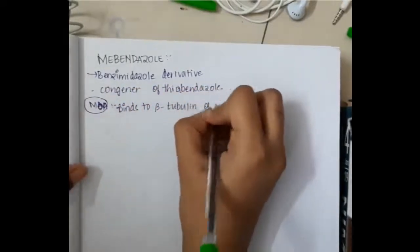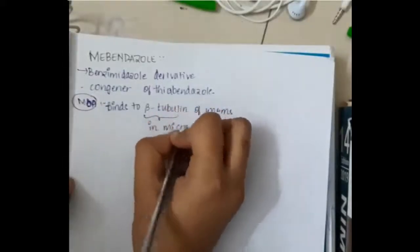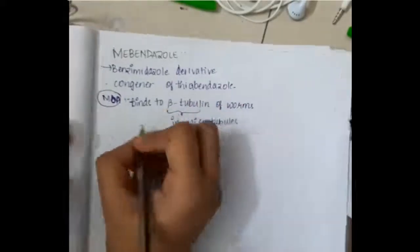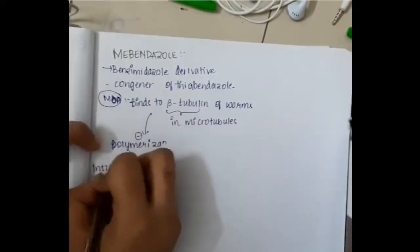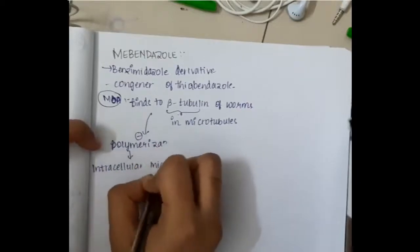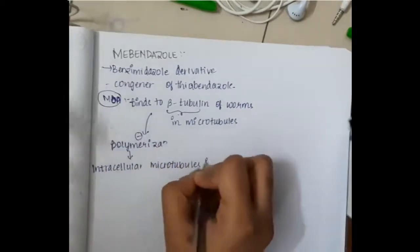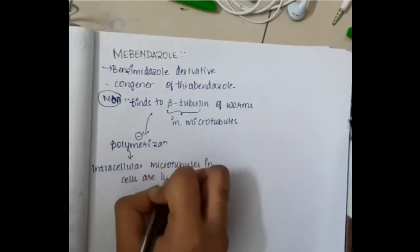Mechanism of action: mebendazole binds to the beta tubulin present in the worms. Beta tubulin is present in microtubules. Once it binds to beta tubulin, it will inhibit the polymerization of the microtubules, and thus the intracellular microtubules in the cells are lost.